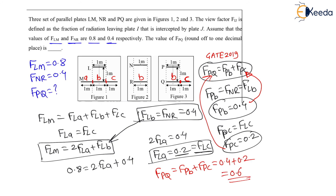So my dear students, for this question, F_PQ equals 0.6. You have to type 0.6 in the fill-in-the-blanks for getting 2 marks. Thank you. In the next lecture we will see one more numerical on this topic from a previous year GATE examination.